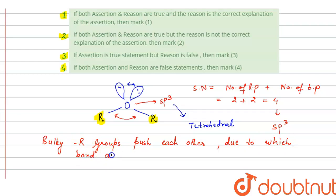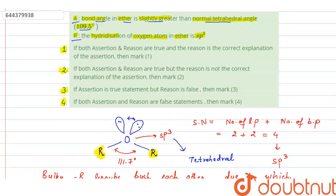Due to which angle increases, due to which bond angle increases. So here the bond angle in ether is 111.7 degree, which is more than the tetrahedral angle. So assertion is true.